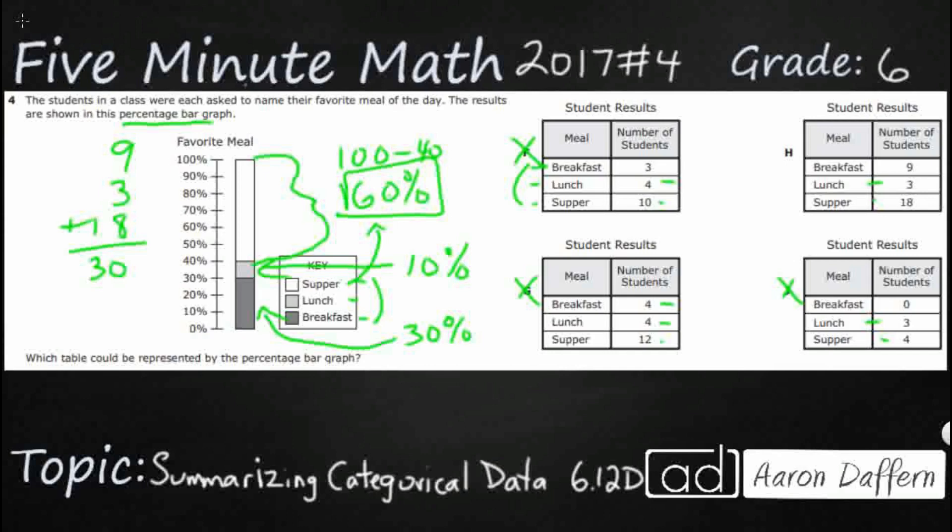So all of these we can view as a fraction, right? So breakfast has got 9 out of 30. Lunch has got 3 out of 30. And then supper has got 18 out of 30. Now, all we need to do is turn those into decimals and each decimal into a percent and we're good to go.